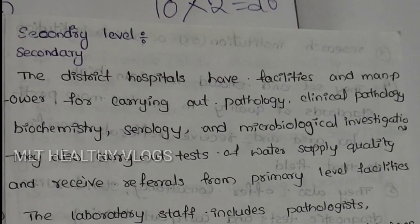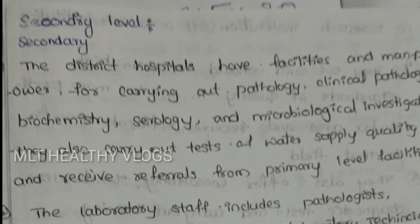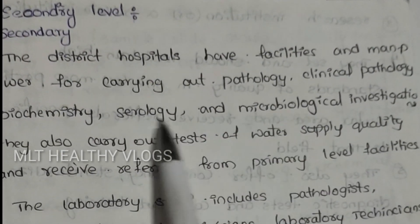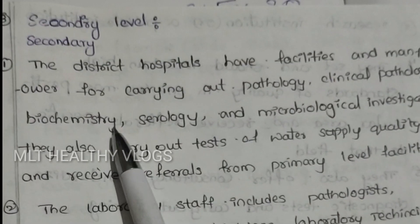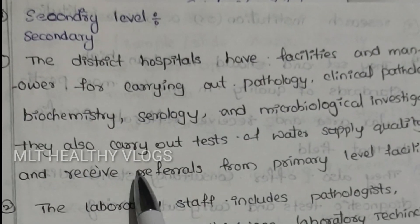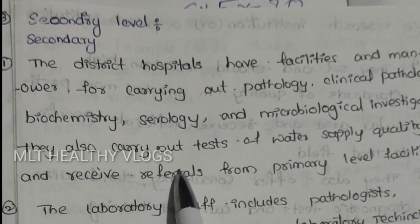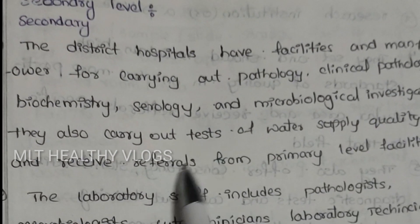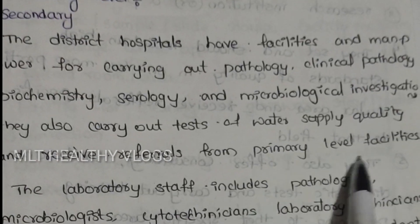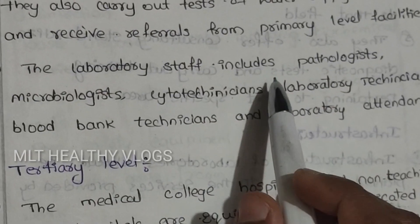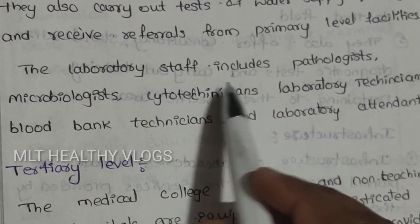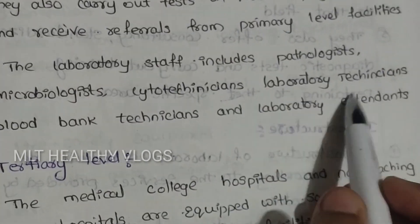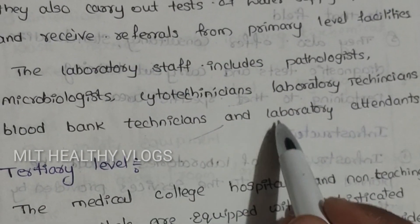Secondary level: there are many laboratories performing tests including antibiotics sensitivity, microbiology, serology, and biochemistry. These labs also do water quality analysis. In secondary level district hospitals, there are microbiologists, cytotechnicians, laboratory technicians, and blood bank technicians.